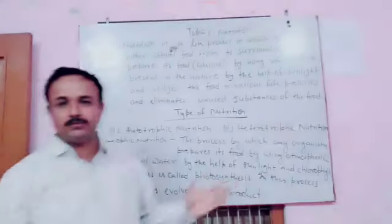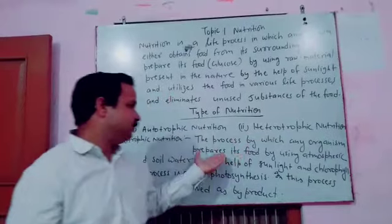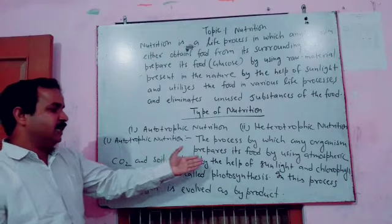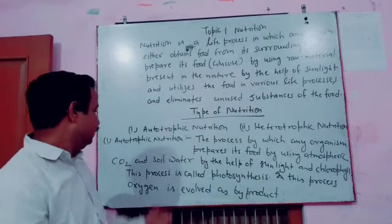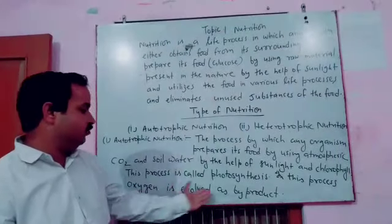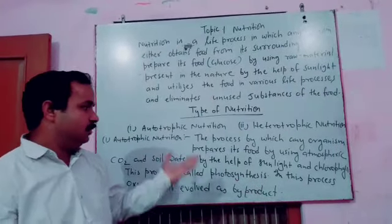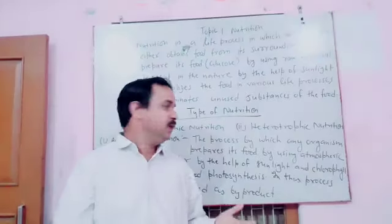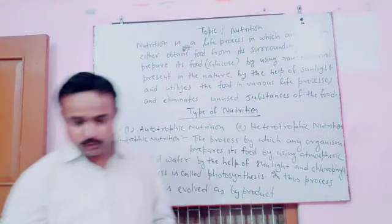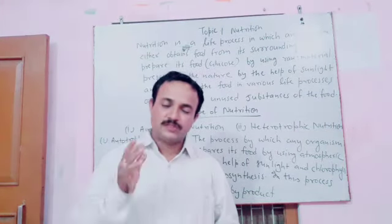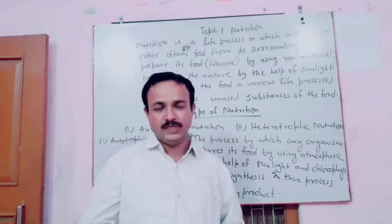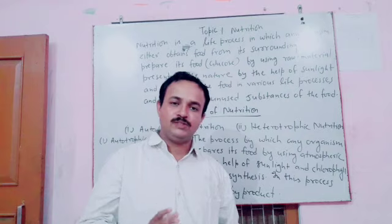The process by which an organism prepares its food by using atmospheric CO2 and soil water with the help of sunlight and chlorophyll is called photosynthesis. In autotrophic nutrition, the organism takes CO2 from the atmosphere and water from the soil, and with the help of sunlight and chlorophyll, forms glucose. In this process, oxygen is released as a by-product.